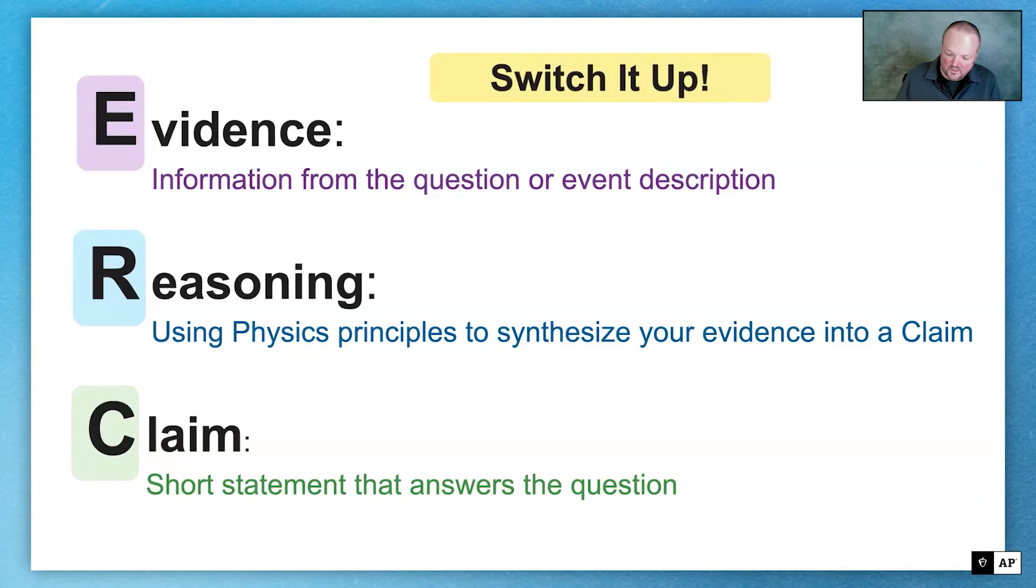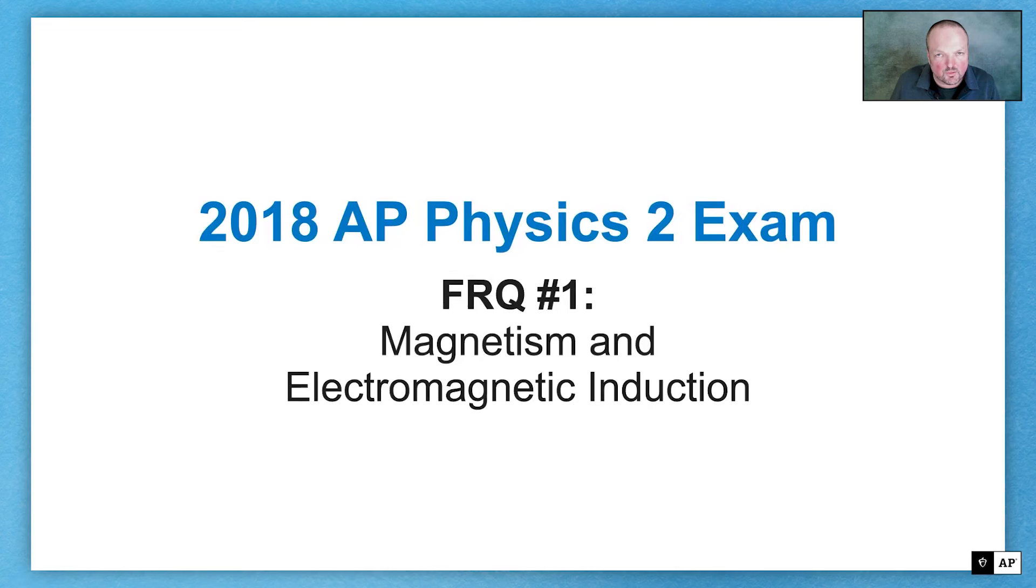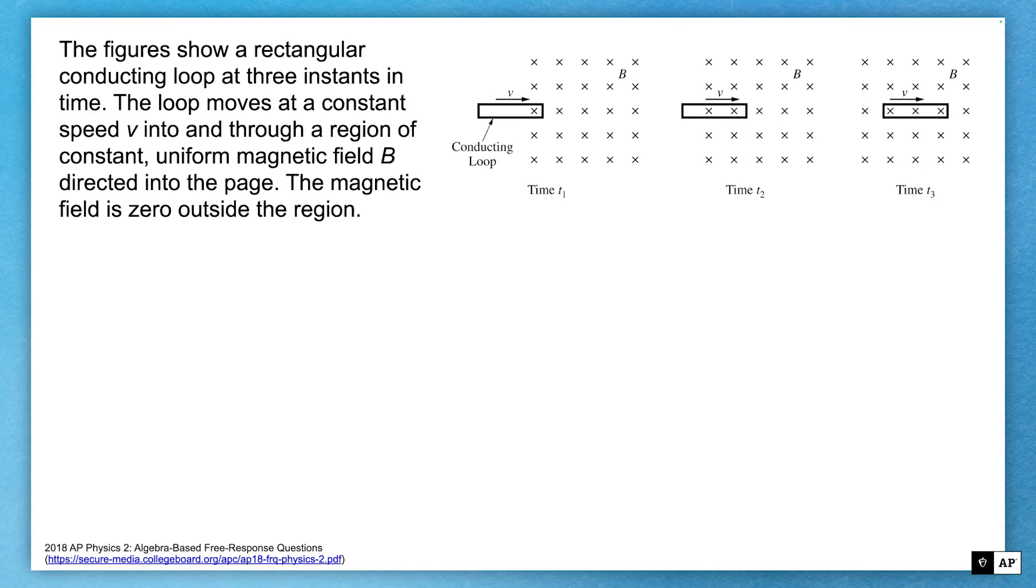We're going to look at a paragraph question from the 2018 AP Physics 2 exam, specifically FRQ number one. Remember, you can download that from the PDF in the link or in the link below if you're looking at YouTube. This is about magnetism and electromagnetic induction. So here's my scenario. You've got a conducting loop that's moving to the right. You've got a uniform magnetic field represented by the B that's directed into the page. They're always going to tell you what the X and the dots mean. In this case, it's into the page. The magnetic field is zero outside of this region. And this loop is moving at a constant speed, very important, into that region.